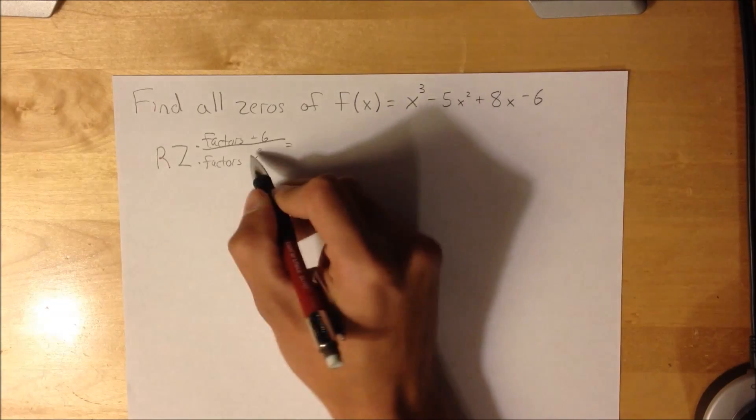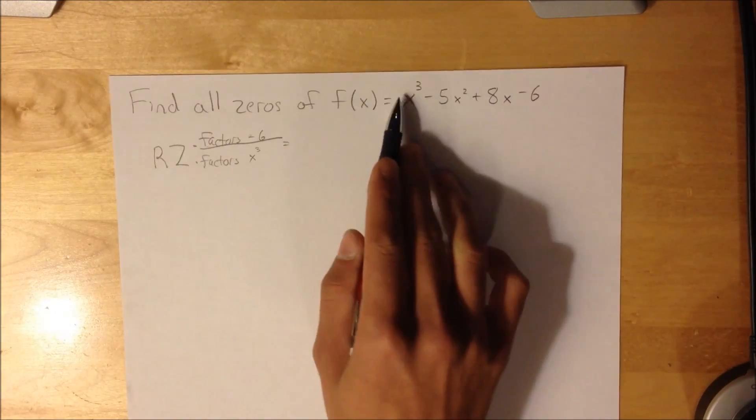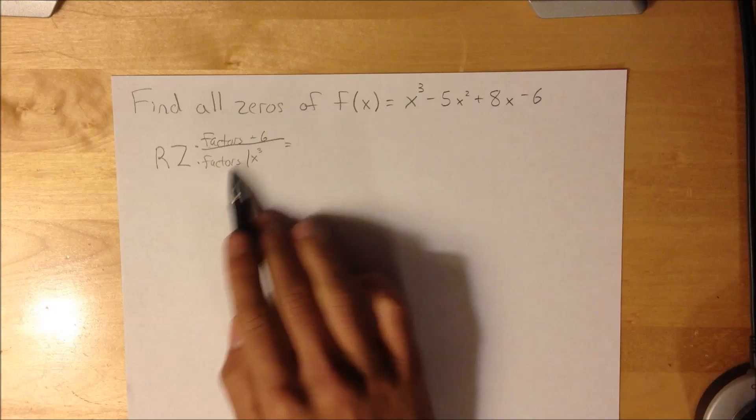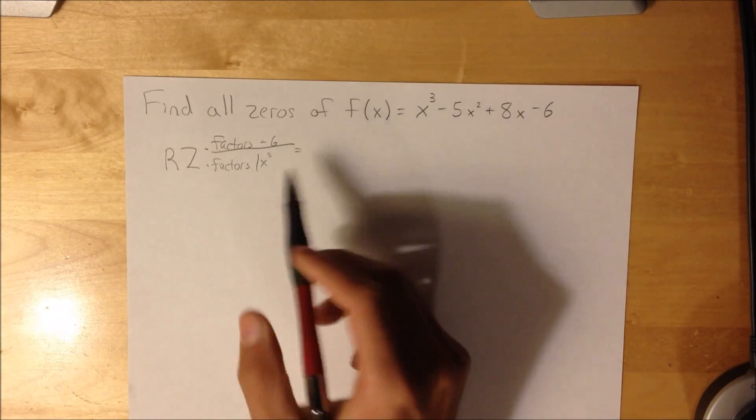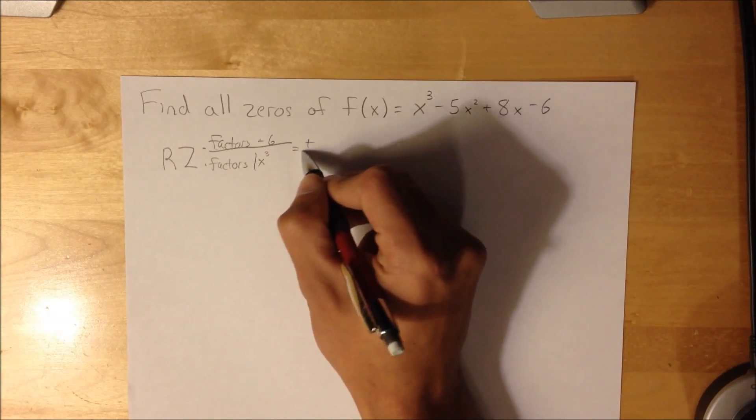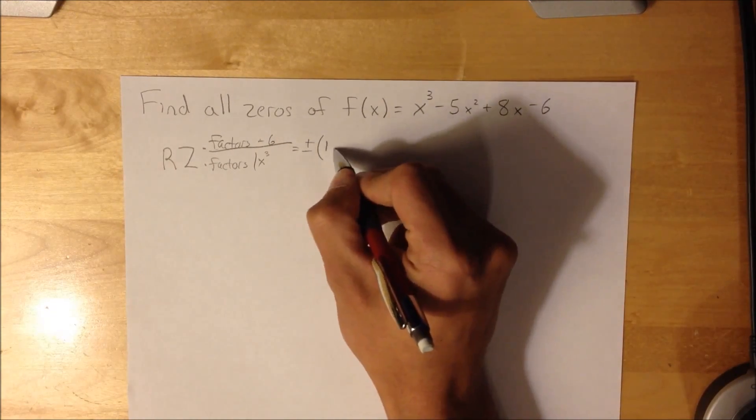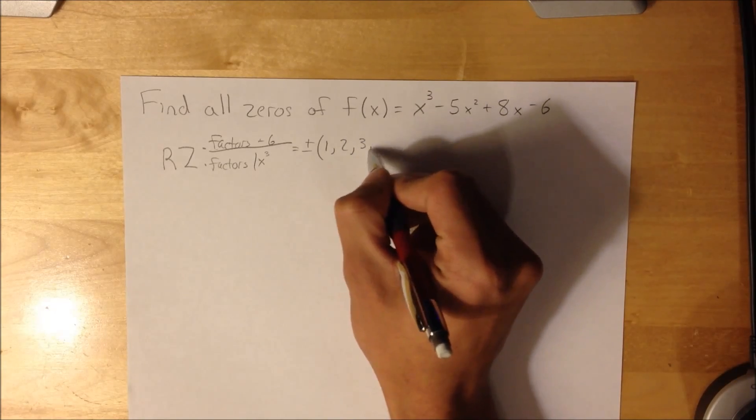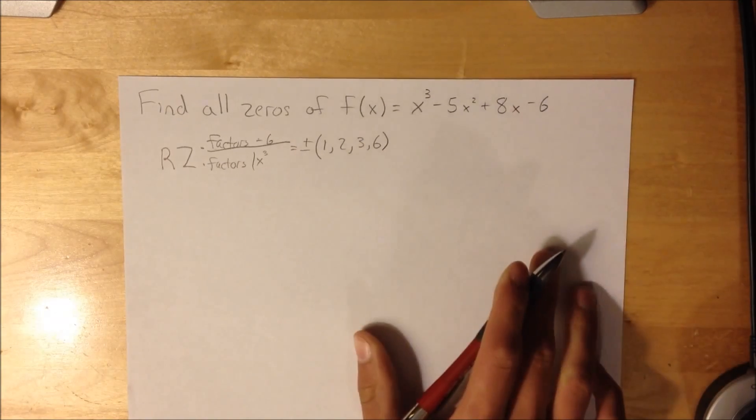And because it's x³, which has factors of 1, I'm just going to take all the factors of -6, which is plus and minus 1, 2, 3, and 6. And now,